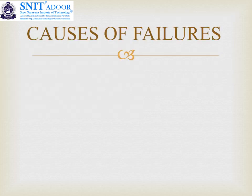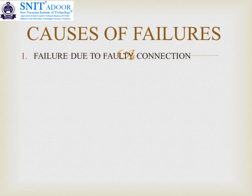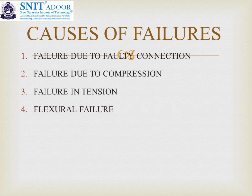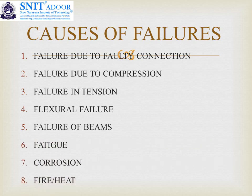Moving on to the various causes of steel failures. These are: failure due to faulty connection — steel is usually connected by rivets or it is being welded; failure due to compression; failure due to tension; flexural failure; failure of beams; fatigue; corrosion; and fire or heat. These eight causes are very important and this question is typically asked for eight marks in exams.